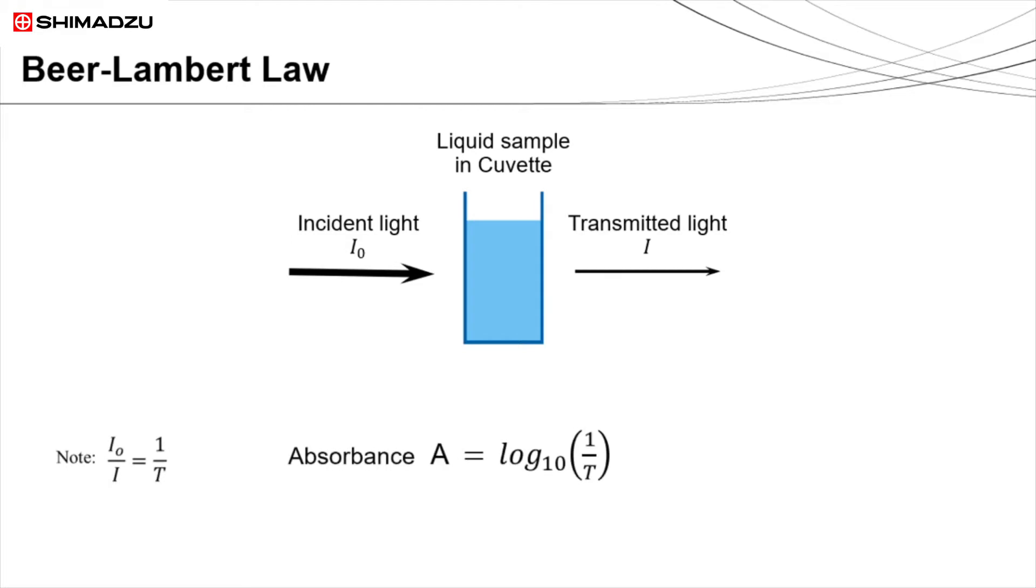Absorbance is used in UV visible spectroscopy to indicate the amount of absorbed light. It is defined as A equals to log 1 over transmittance.